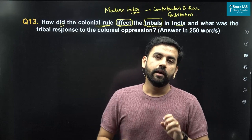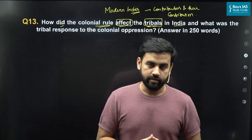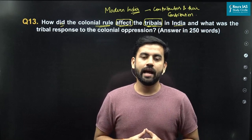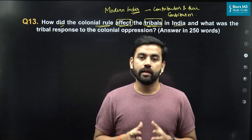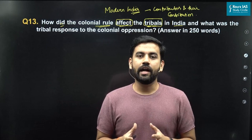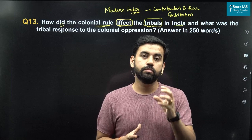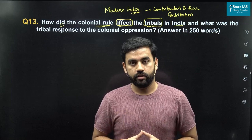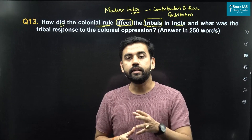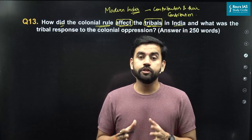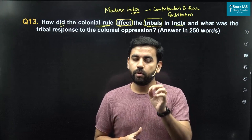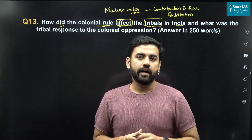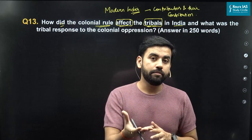The Britishers came with an objective of colonizing and commercial exploitation. Whenever they wanted more money, they had to intervene in the lives of the locals. For that they had to expand agriculture, which was the most important economic activity back then. In order to expand agriculture, they had to clear the forests and enter tribal regions. This policy of expansionism had an objective of higher land revenue.